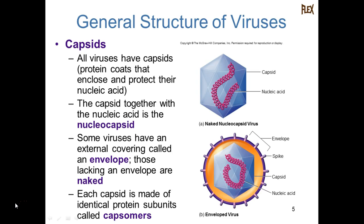All viruses have a capsid — a protein that encloses and protects the nucleic acid. The capsid along with the nucleic acid is referred to as the nucleocapsid. Some viruses have an external covering called the envelope, which is stolen from the host cell. Those lacking an envelope are called naked. Each capsid is made of identical protein subunits called capsomers, whose synthesis is directed by the virus's nucleic acid, which instructs the host cell to make these capsomers. The capsomers then self-assemble.